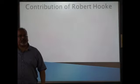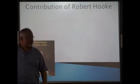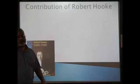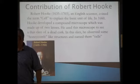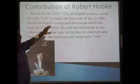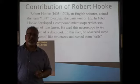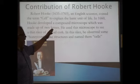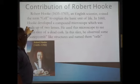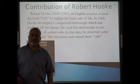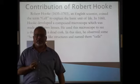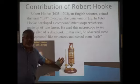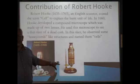Another scientist, Robert Hooke, was born in 1635 and died in 1703. He was an English scientist who coined the term 'cell' — he was the first to give the name 'cell' to these units to explain the basic unit of life. In 1660 he developed a compound microscope, which unlike the simple microscope had more than one lens.